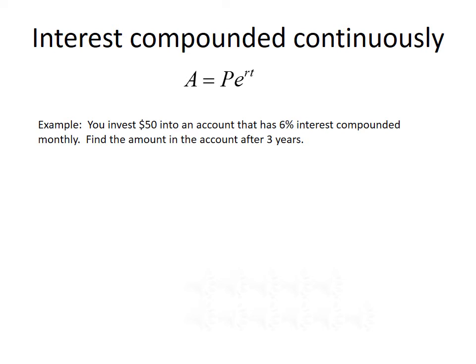Our first example says you invest $50 into an account that has a 6% interest rate compounded monthly. Find the amount in the account after three years. Since we have interest compounded monthly, we'll use the compound interest formula A equals P times 1 plus R over N raised to the NT power. Reading through the problem: P equals 50, R equals 0.06, and compounded monthly means N is equal to 12.